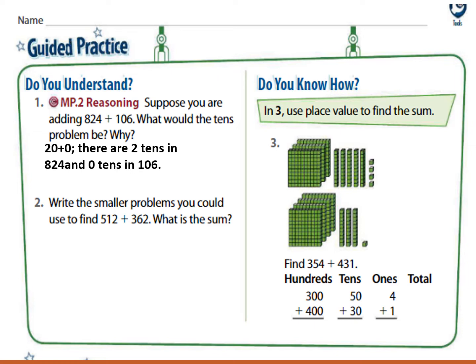Now look at question number 3: use place value to find the sum. Look at the place value blocks. Count on the hundreds to find the total number of hundreds, count on the tens to find the total number of tens, and count on the ones to find the total number of ones. We have 300 plus 400 equals 700. Now the tens: 50 plus 30 equals 80. And 4 plus 1 equals 5. So 700 plus 80 plus 5 equals 785.